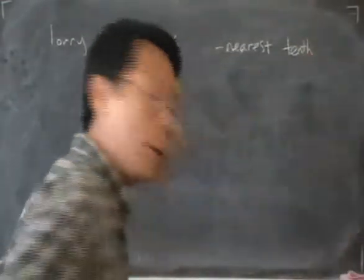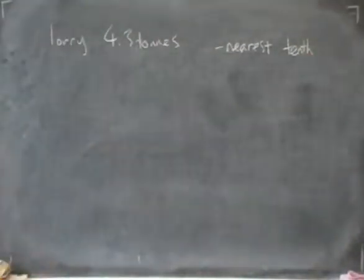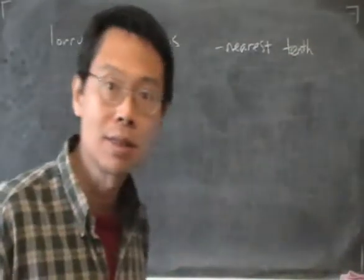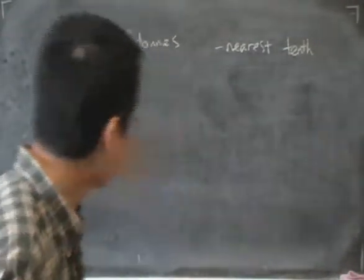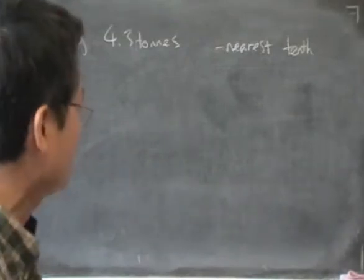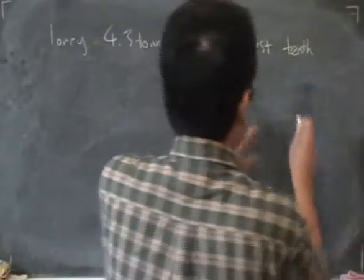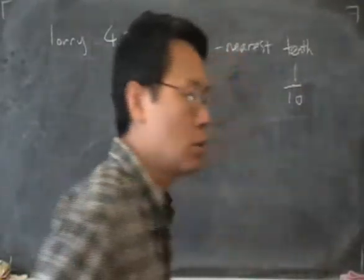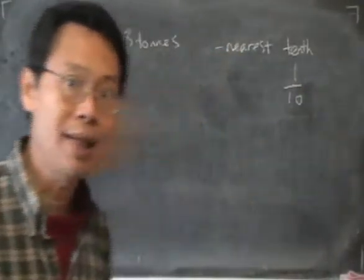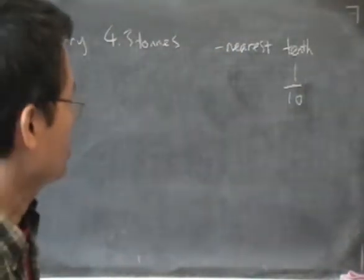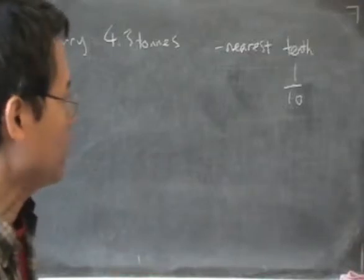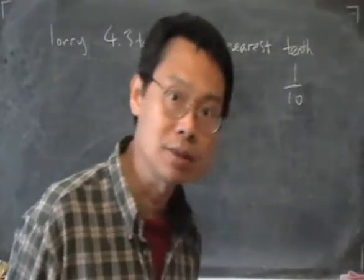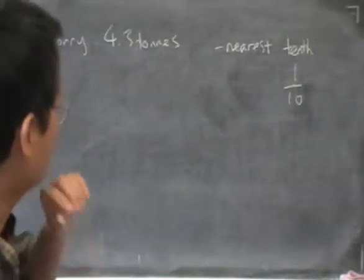But what does it mean, the nearest tenth? What is this tenth about? Well, the tenth here refers to the fraction one-tenth, one over ten. One over ten means a tenth with a 'th' behind it — so it means a fraction.